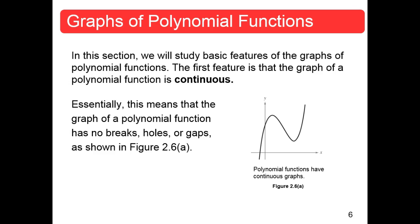In this section, on page 123, we'll study basic features of the graphs of polynomial functions. The first feature is that the graph of a polynomial function is always continuous. I hope you remember what that means from chapter 1 when we talked about piecewise defined functions, which weren't always continuous. A continuous function means there are no gaps, no holes, no missing values, no discontinuities anywhere. This is an example of a polynomial function.